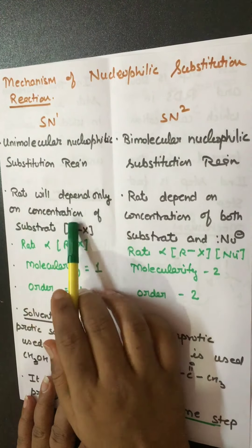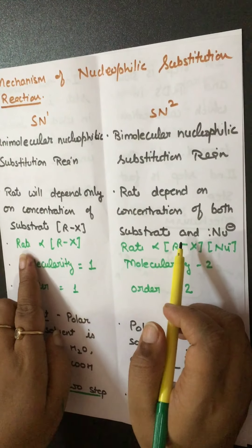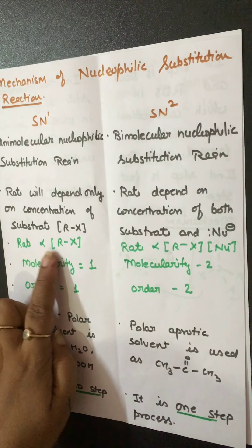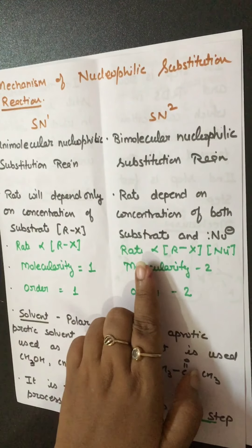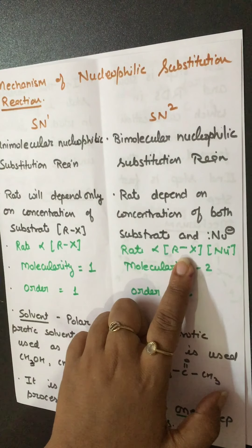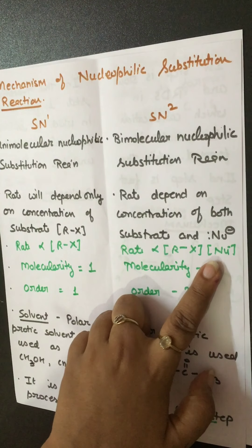While in case of SN2, SN2 means bimolecular, and in this case rate will depend upon both molecules — the substrate and the nucleophile. So rate depends upon the concentration of both substrate and nucleophile. In case of SN1, rate depends only on the substrate, while in case of SN2, rate depends on both substrate and the nucleophile.